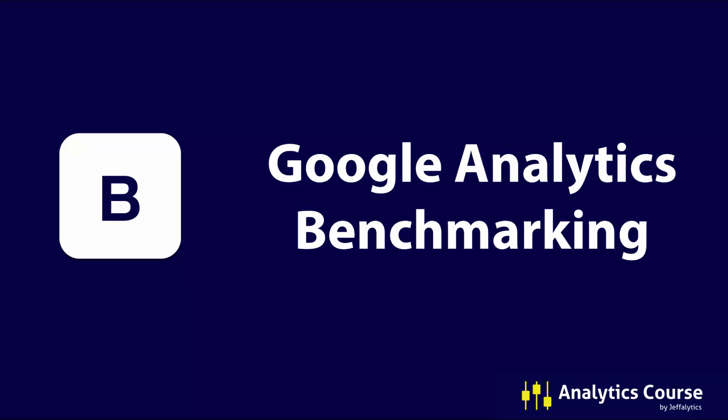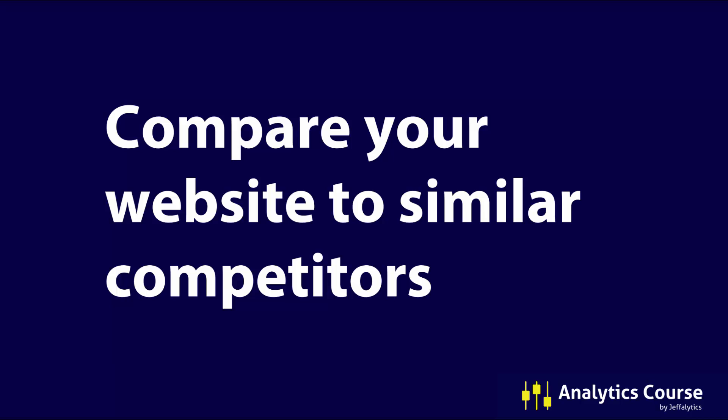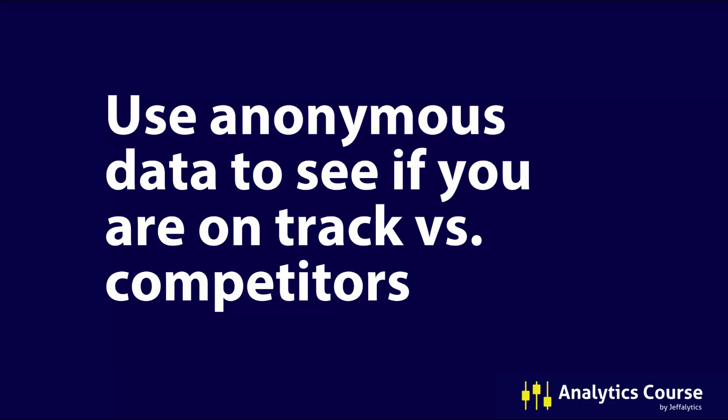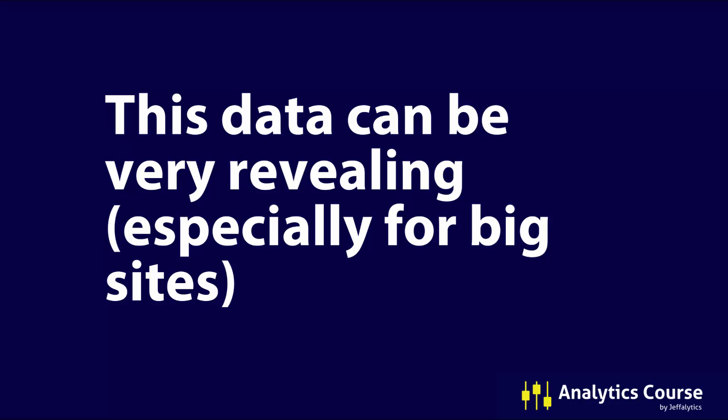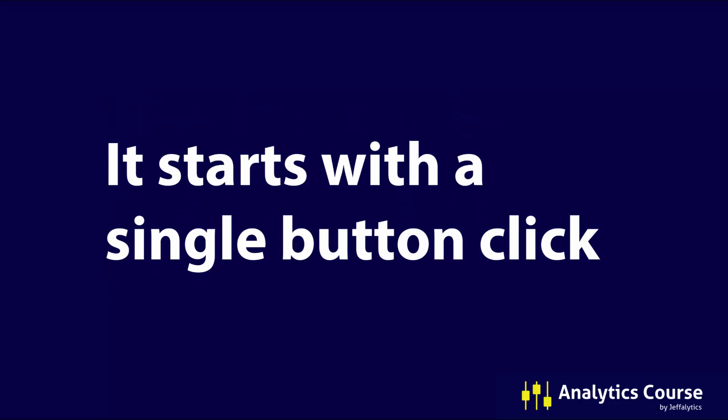Let's talk about benchmarking in Google Analytics. This is the element of 'B' for Google Analytics benchmarking. What we can do here is compare our website to similar competitors — how much traffic are we getting, where is that traffic coming from, and even knowing what devices people use on our site compared to our competitors. You use anonymous data to see if you are on track versus your competition, meaning are you doing better or worse for each of the different traffic channels and devices. This data can be very revealing about what's happening in your marketing environment, especially if you have a big site.